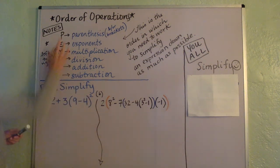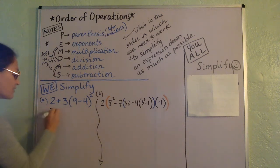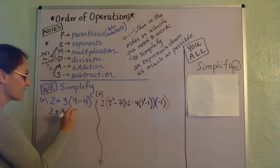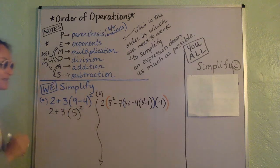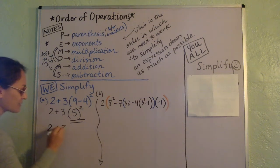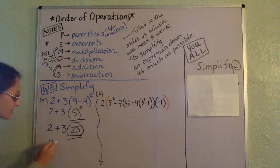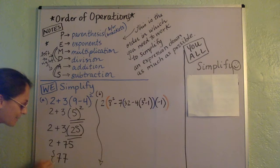Think order of operations. First thing is parentheses. That means we're going to start right here. So I'm going to do 2 plus 3. 9 take away 4 is 5. Next thing is exponents. That's right here. So that's 2 plus 3. 5 squared, of course, is 25. Next, I see a multiplication. I also see an addition, but multiplication comes first. So this is 2 plus 3 times 25 is 75.